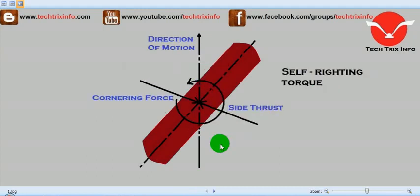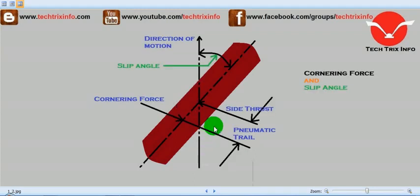You can see over here on the screen, the cornering force is over here and the side thrust now is not offset. Actually, the reality is like this: the side thrust and the cornering force are offset by this distance which is called the pneumatic trail.